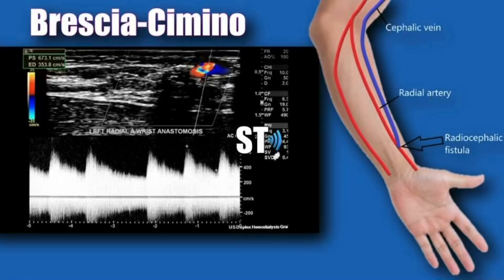We'll begin with arteriovenous fistula. An arteriovenous fistula is an artificial channel that's created between an artery and a vein. This is usually done surgically. The most common AV fistula for hemodialysis is the Brescia-Cimino fistula, in which the radial artery and cephalic vein are joined together surgically.